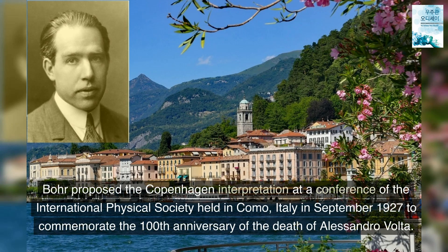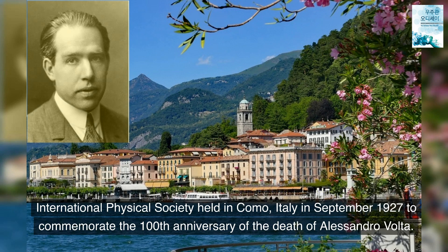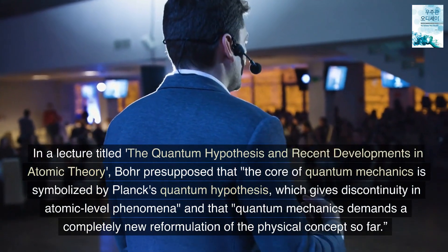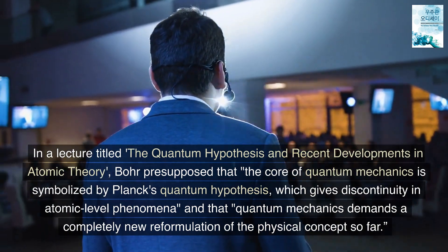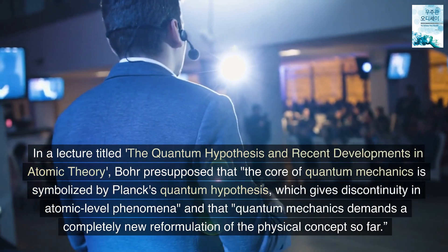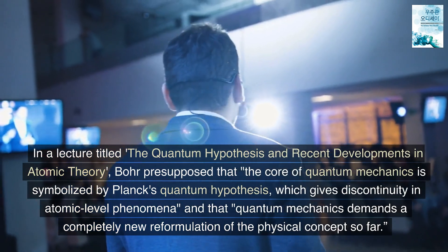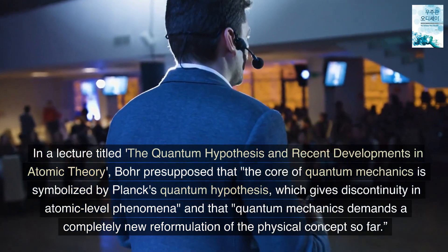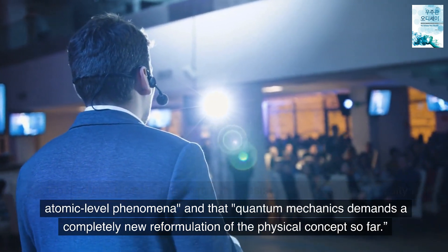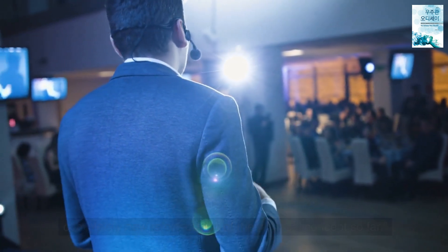Bohr proposed the Copenhagen interpretation at a conference of the International Physical Society held in Como, Italy in September 1927 to commemorate the 100th anniversary of the death of Alessandro Volta. In a lecture titled 'The Quantum Hypothesis and Recent Developments in Atomic Theory,' Bohr presupposed that the core of quantum mechanics is symbolized by Planck's quantum hypothesis, which gives discontinuity in atomic-level phenomena, and that quantum mechanics demands a completely new reformulation of the physical concept so far.